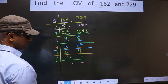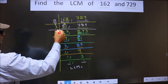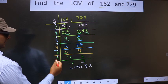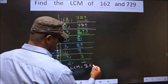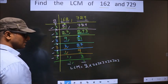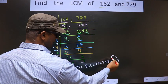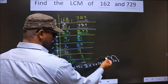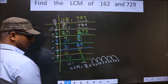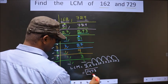Now we got 1 in both places. Our LCM is the product of all these numbers. That is, 2 multiplied by how many times did we get 3? We got 3 six times. So: 3 into 3 into 3 into 3 into 3 into 3. Let us multiply: 3 into 3 is 9, 9 into 3 is 27, 27 into 3 is 81, 81 into 3 is 243, 243 into 3 is 729, and 729 into 2 gives us 1458. This is our LCM.